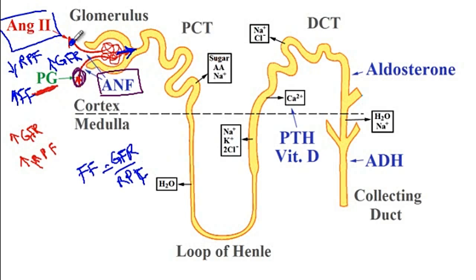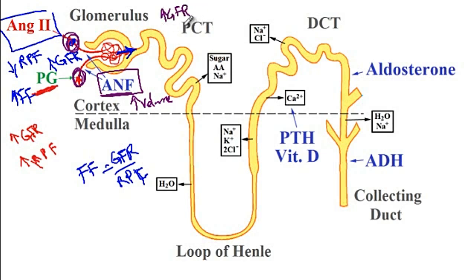Atrial natriuretic factor acts on both the afferent and efferent arterioles. It is secreted when there is elevated volume in the atrium, and it enhances volume loss to decrease blood volume. It causes afferent arteriolar dilation as well as efferent arteriolar constriction, resulting in elevated GFR that causes volume loss. In addition, it acts on sodium channels in the distal convoluted tubules and prevents sodium uptake to further enhance volume loss.